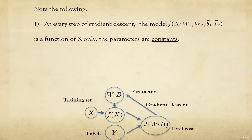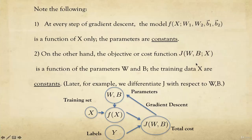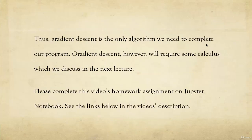An important distinction: at every step of gradient descent, the model f is a function of x — the images — while W and B are fixed constants. The cost function J, on the other hand, is a function of the parameters W and B, with the data fixed. So f is a function of x, and J is a function of W and B. Understanding gradient descent requires some calculus, which we'll discuss intuitively in the next lecture.